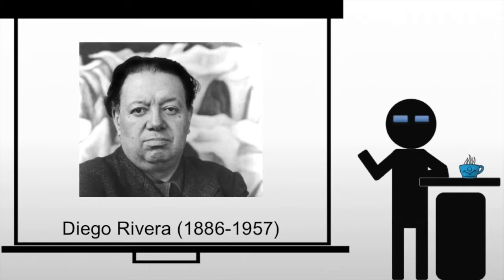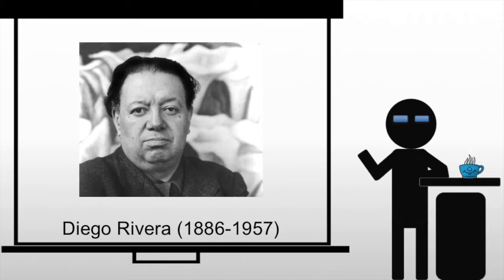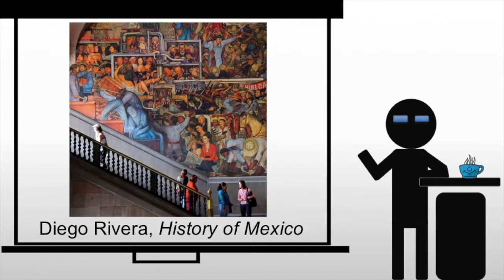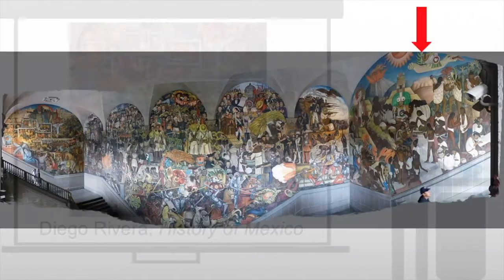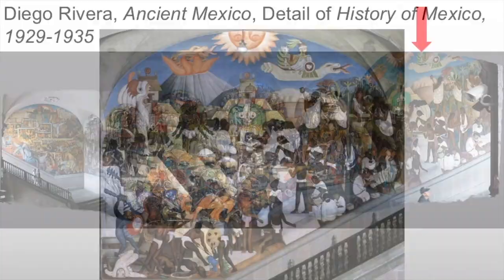He created a number of large murals in public buildings, among them a series lining the staircase of the National Palace in Mexico City. Here you get a sense of the scale of what we're looking at, and this specific piece is known as Ancient Mexico.